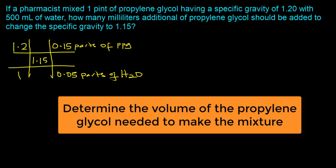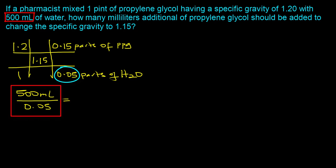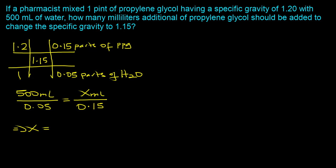Now we determine the volume of propylene glycol needed. We set up a proportion: 500 milliliters of water divided by its 0.05 parts equals the unknown volume x of propylene glycol divided by its 0.15 parts. Solving for x: x equals 500 milliliters times 0.15 divided by 0.05, which gives 1500 milliliters.